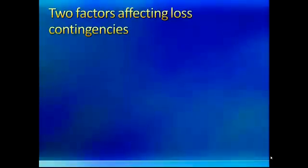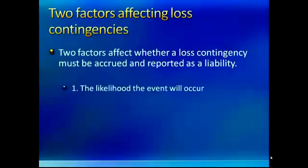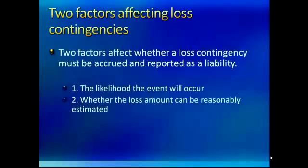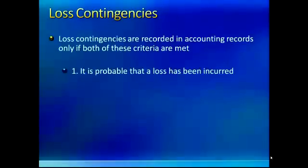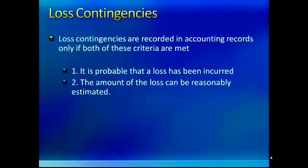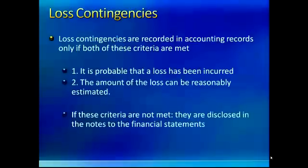The two factors affecting loss contingencies are: first, what is the likelihood that the future event will happen, and second, can you actually estimate it? If it's probable that the lawsuit will be filed and you can estimate the amount, you have to book the liability. Both criteria must be met — it has to be probable that the loss has been incurred, and the amount must be reasonably estimable. If those criteria aren't met, you just disclose them in the financial statements.